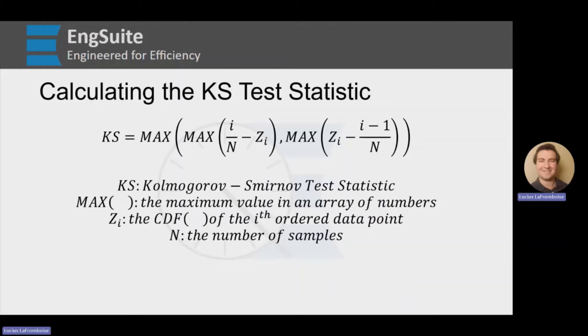So how do we calculate the KS test statistic? KS equals the maximum of two different maximums. The first is I over N minus ZI. The second is ZI minus I minus 1 over N.